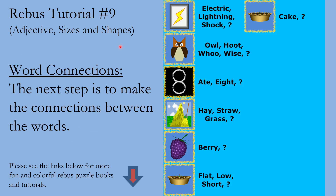Here we have all the different word associations. This one: electric, lightning, shock. The owl — we've seen before. Eight. Hay, straw, grass. Berry. For the adjective part, we break it into two pieces: one is the adjective and the other is the noun. The adjective portion is that it's short, flat, low, squished, or shrunk.